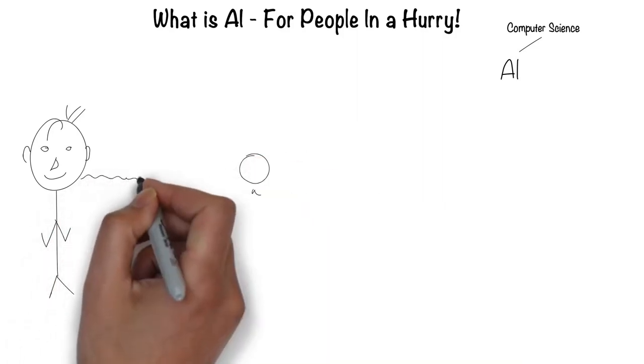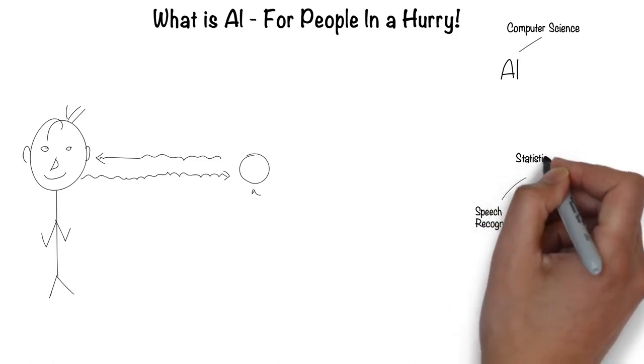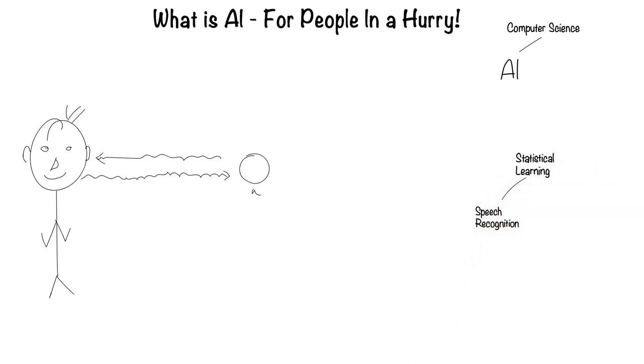Humans can speak and listen to communicate through language. This is the field of speech recognition. Much of speech recognition is statistically based, hence it's called statistical learning.